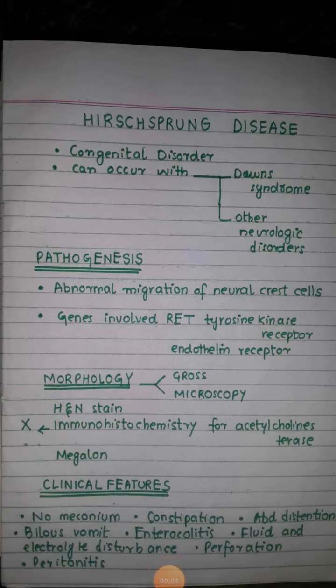In this video we will discuss Hirschsprung disease. Hirschsprung disease is a congenital disorder, mostly seen in people who have Down syndrome or who are suffering from other neurological disorders. Basically it is called a congenital disease.